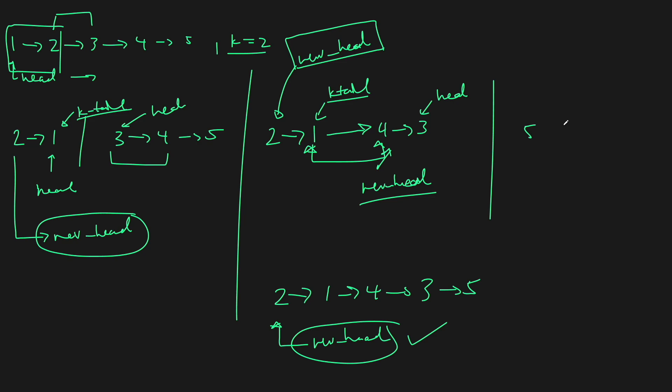Now let's go to the code editor and type it out. I'll walk through everything line by line. We have a few pointers, and maybe it's not entirely clear when we update them. This was the general intuition — reverse k at a time and keep track of pointers to update the linked list as necessary.